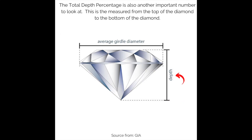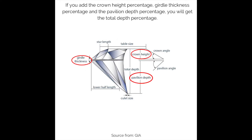The total depth percentage is another important number to look at. This is measured from the top of the diamond to the bottom. If you add the crown height percentage, the girdle thickness percentage, and the pavilion depth percentage, you will get the total depth percentage.